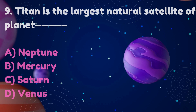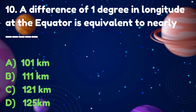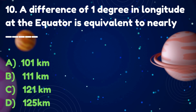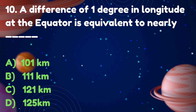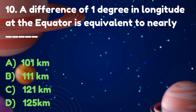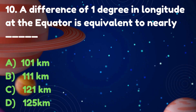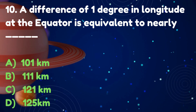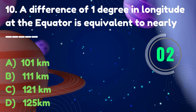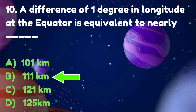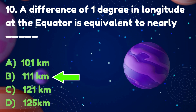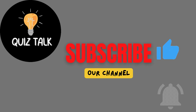A difference of one degree in longitude at the equator is equivalent to nearly: 101 km, 111 km, 121 km, or 125 km. Answer: 111 km. Aisi hi more interesting videos ke liye subscribe zarur karo aur bell icon dabana na bholo.